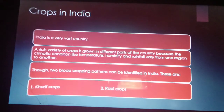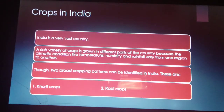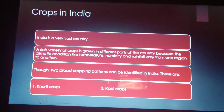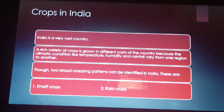India is a very vast country. A rich variety of crops is grown in different parts of the country because climatic conditions like temperature, humidity and rainfall vary from one region to another. Two broad cropping patterns can be identified in India: kharif crops and rabi crops.